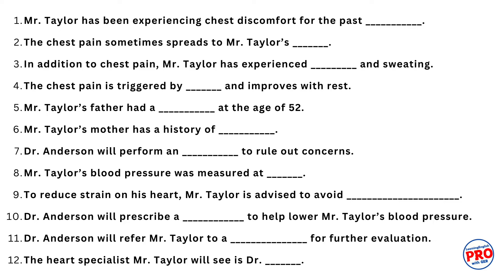Okay. Let's take your blood pressure and do an electrocardiogram to rule out any concerns. Your blood pressure is 160 over 95, which is high — we'll need to address that. It's something we'll monitor closely. In the meantime, I recommend avoiding heavy lifting and strenuous exercise. I'll also prescribe a beta blocker to help lower your blood pressure and reduce strain on your heart.